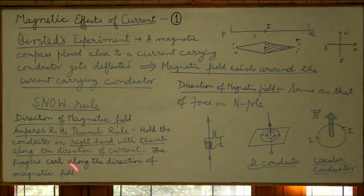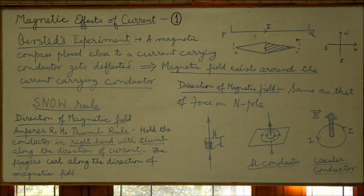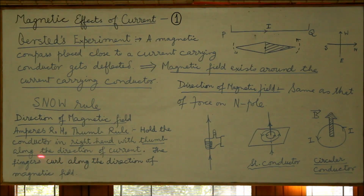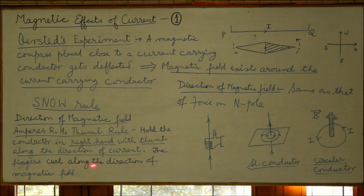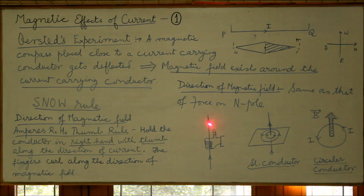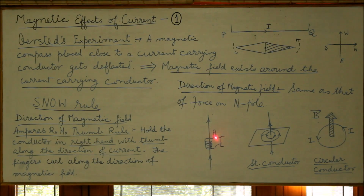We have a rule given by Ampere, called Ampere's right-hand thumb rule, which gives the direction of the magnetic field due to a current-carrying conductor. The rule states: hold the conductor in the right hand with the thumb along the direction of current; then the fingers of the right hand curl along the direction of the magnetic field. Here we have a straight conductor carrying current in an upward direction, and the thumb is pointing upwards as required.